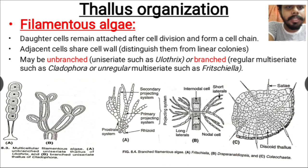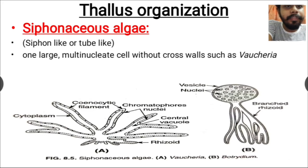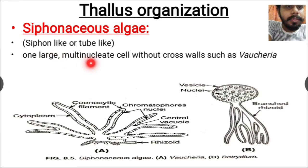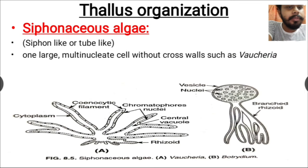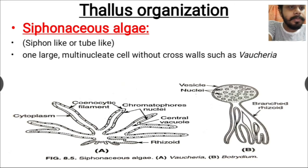Next is siphonaceous algae. The word 'siphon' means a tube, so according to their name this is a tube-like structure, which is why they are known as siphonaceous algae. They have one large multi-nucleated cell without cross walls. The example is Vaucheria, which has a tube-like structure with no cross walls between cells.